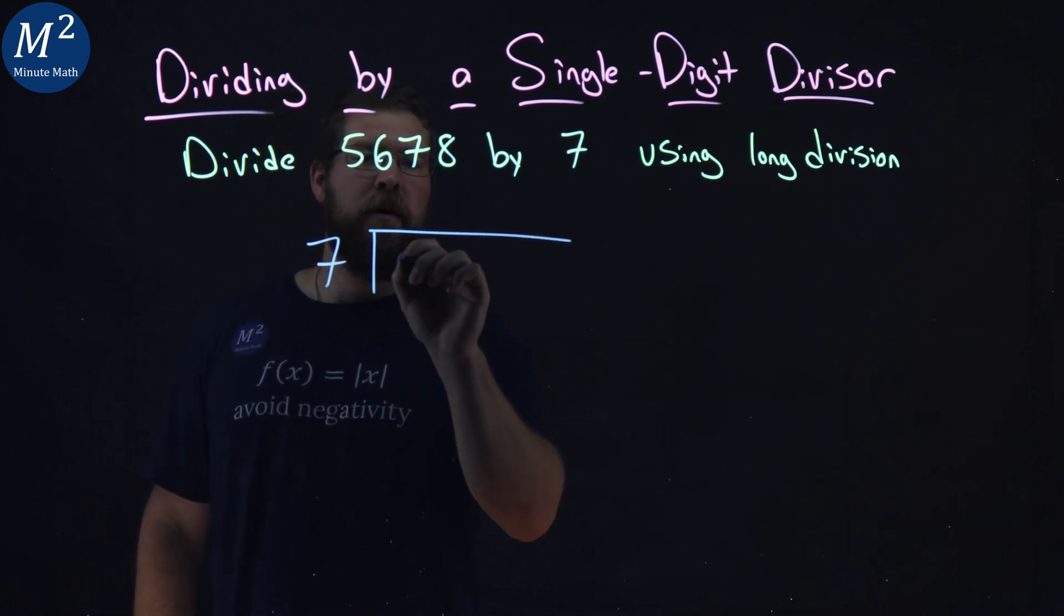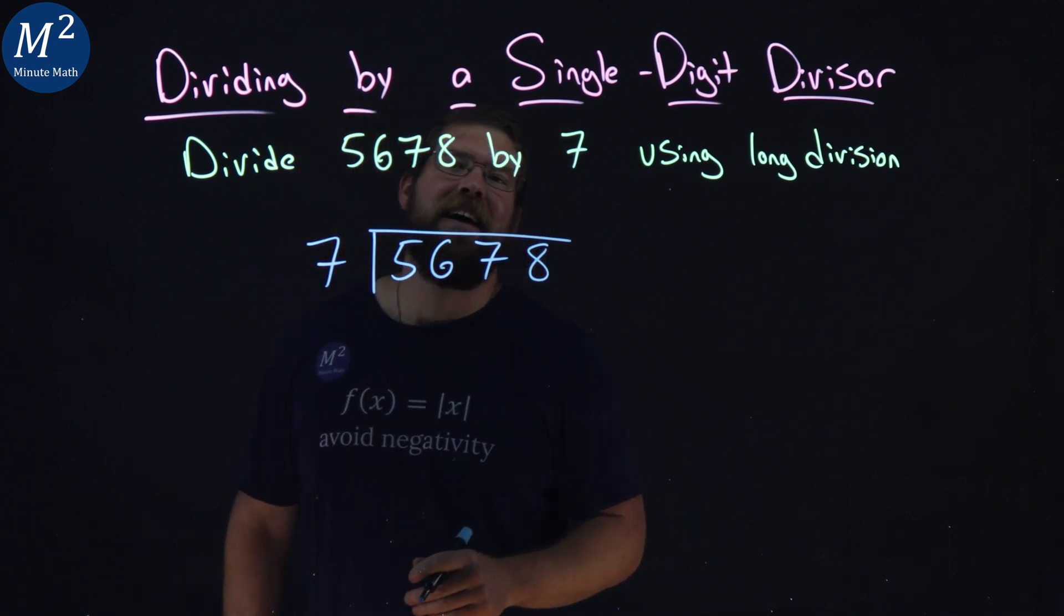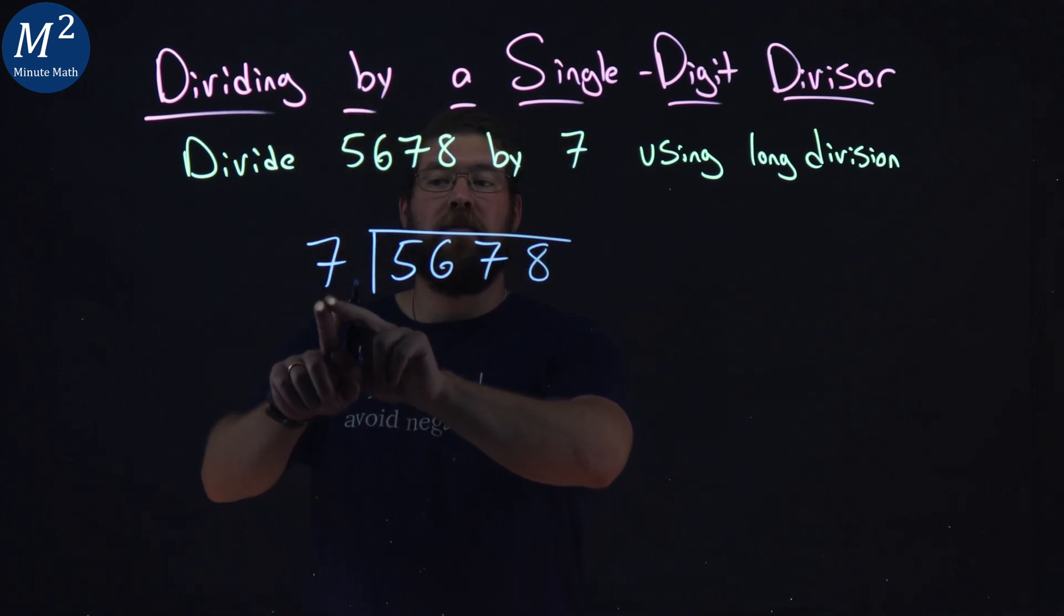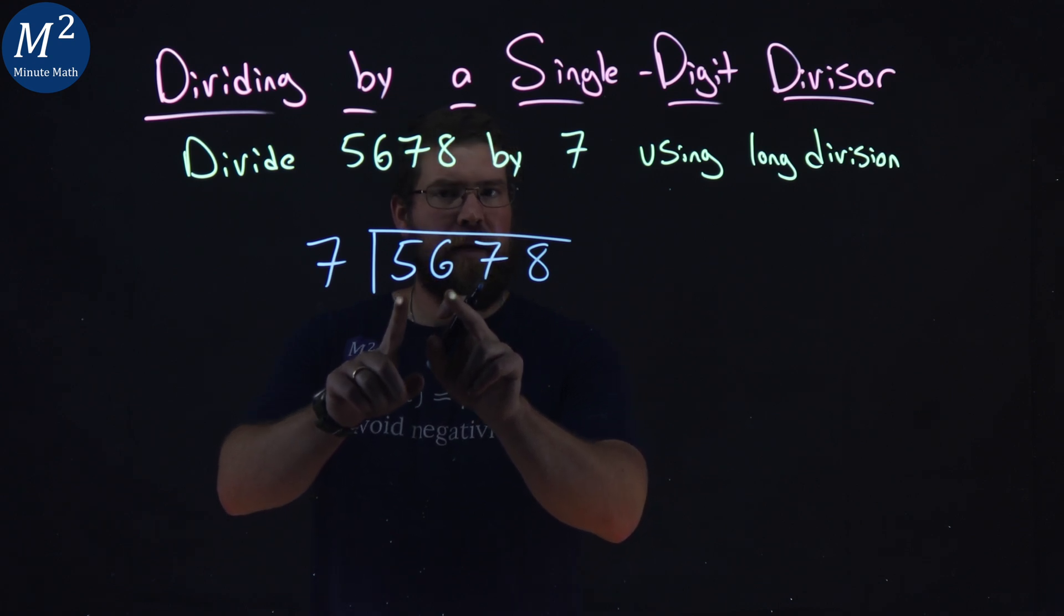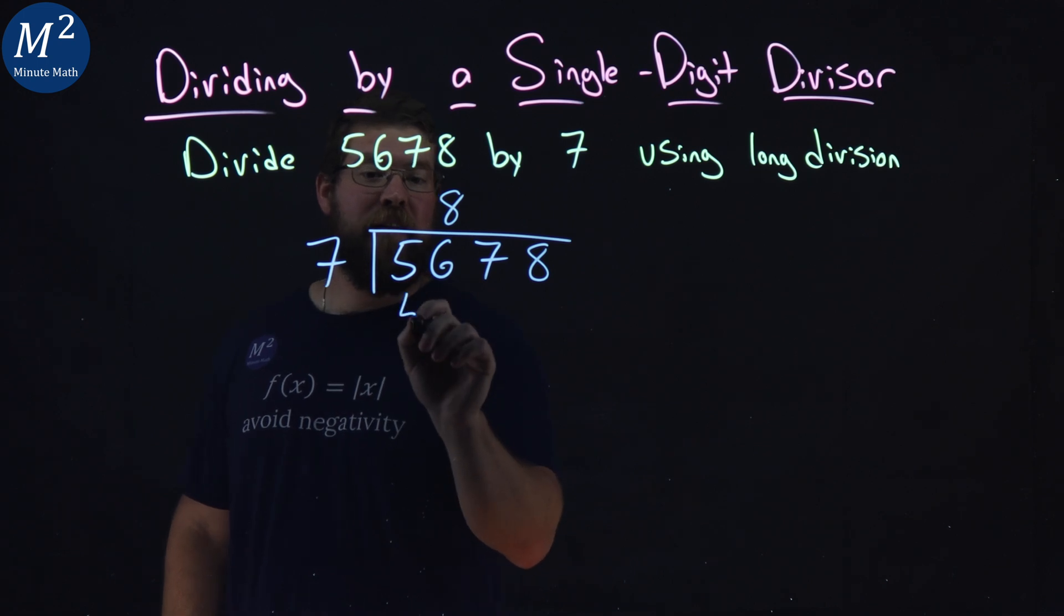We have 7 goes into 5, 6, 7, 8. And so we first look, how many times does 7 go into 56 right here? And that's going to be 8 times. 8 times 7 is 56.